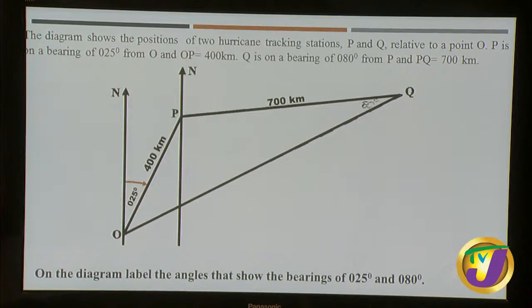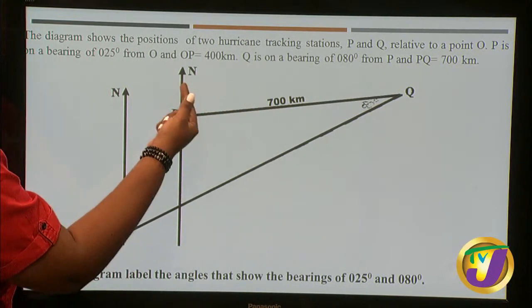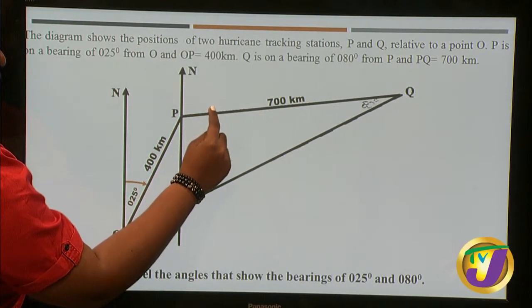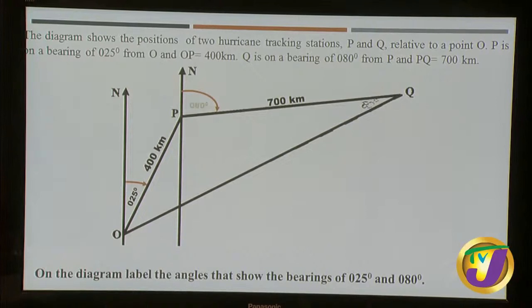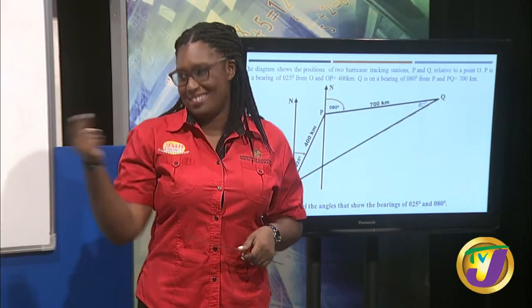For the second bearing, we measure from P to Q. We establish a north line at P and measure 080° clockwise to point Q. Going in a clockwise direction from the north line at P, we arrive at Q, and we label that angle 080°.